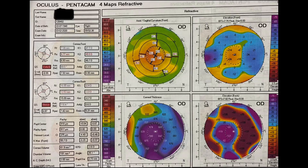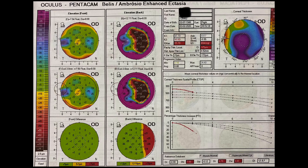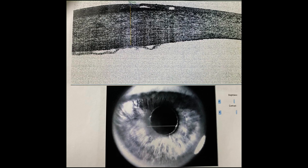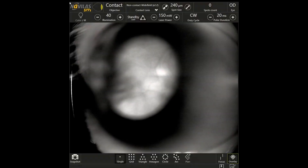Phacoemulsification with subsequent keratotransplantation were planned. Scheimpflug corneal tomography shows significant anterior and posterior corneal irregularities and also areas of corneal thinning and thickening. An OCT shows marked changes of epithelium, endothelium, and corneal stroma.